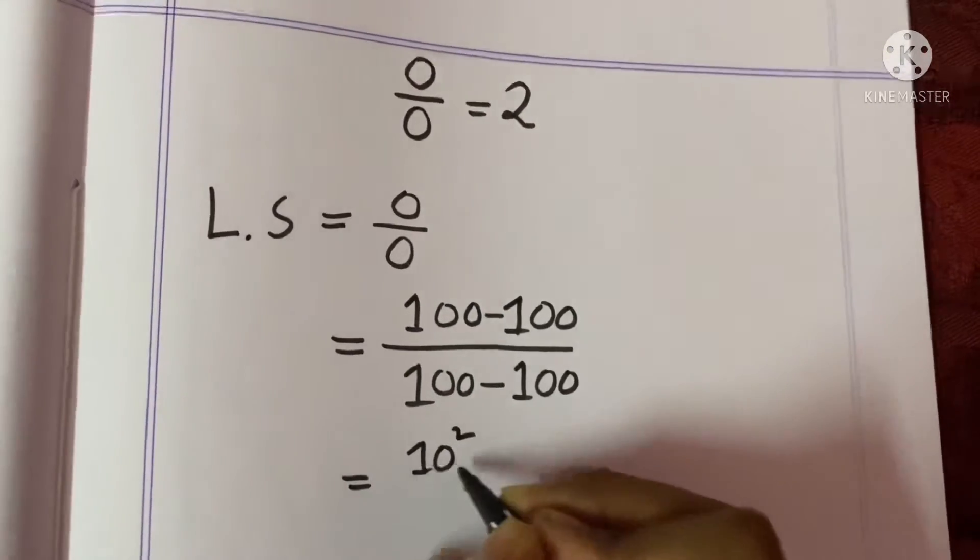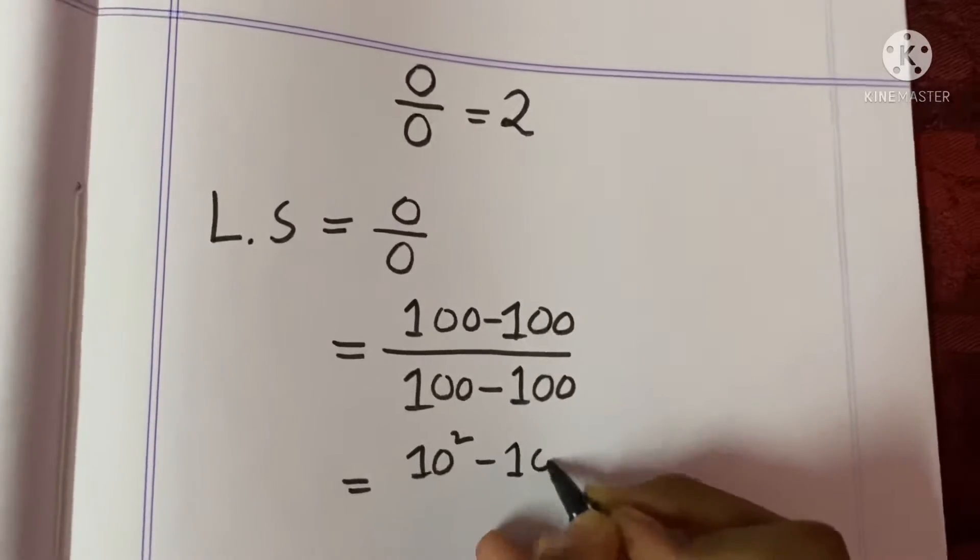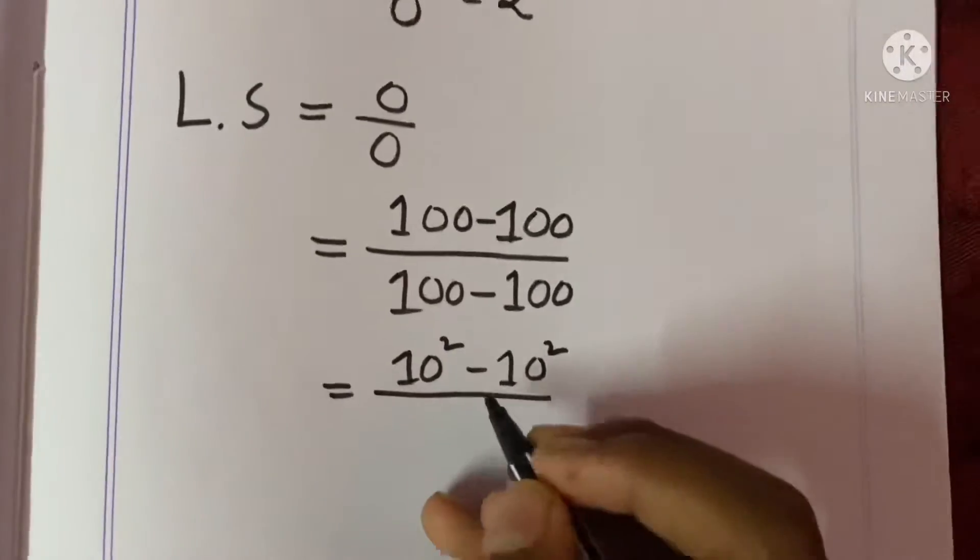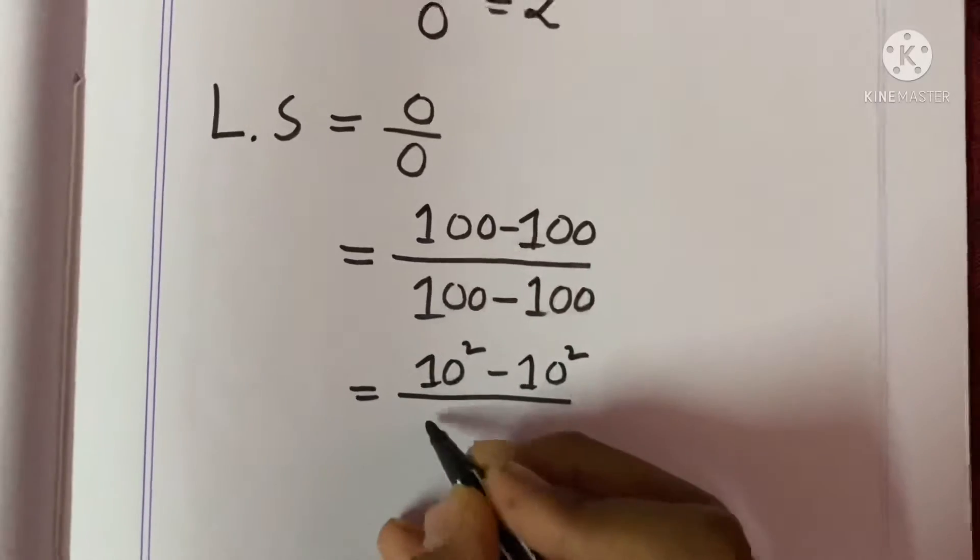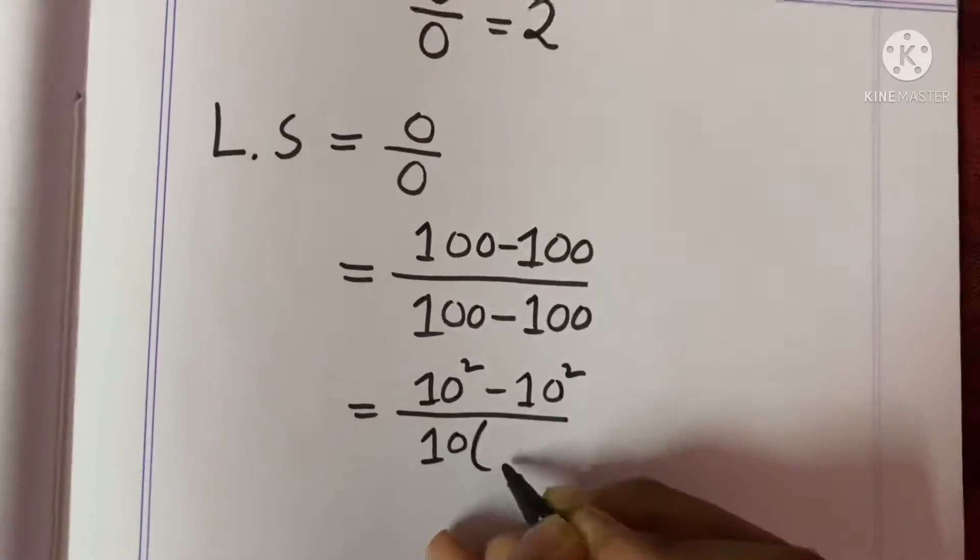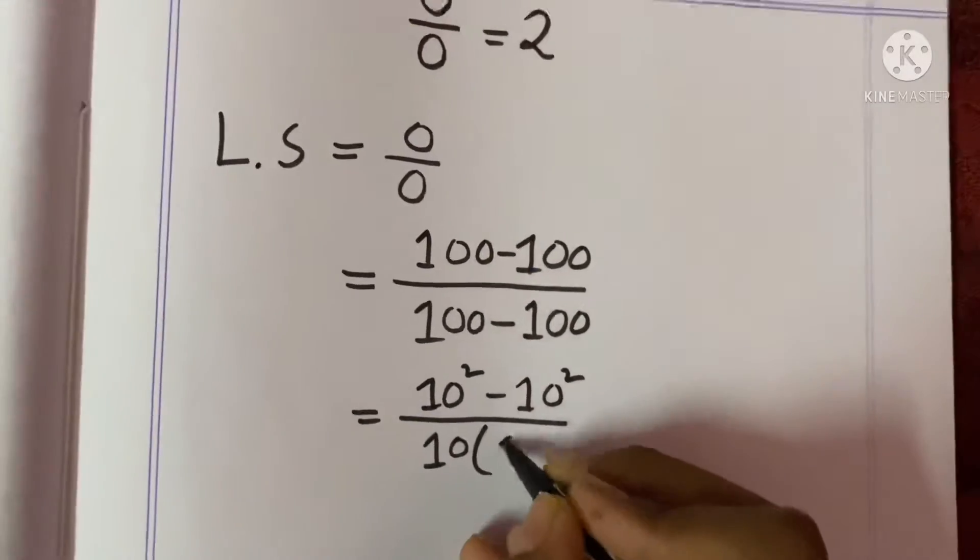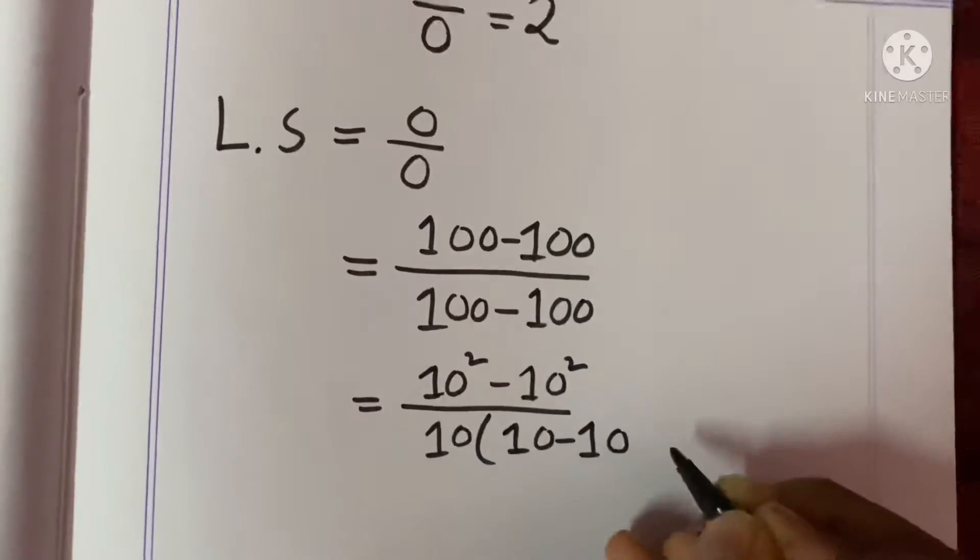this like this: 10 square minus 10 square divided by—you can take common 10 and 10 minus 10.